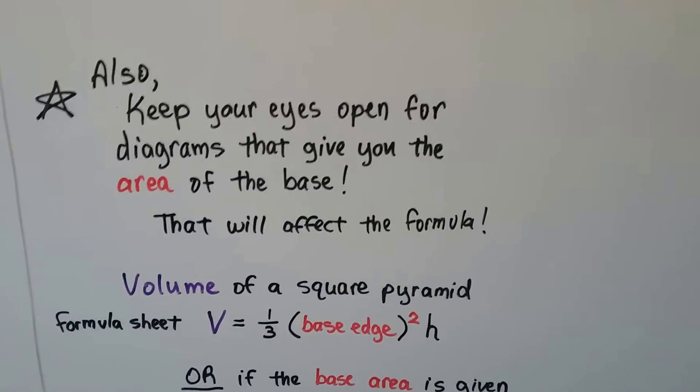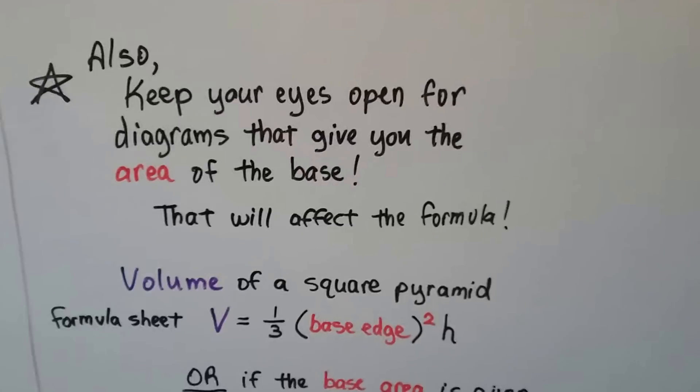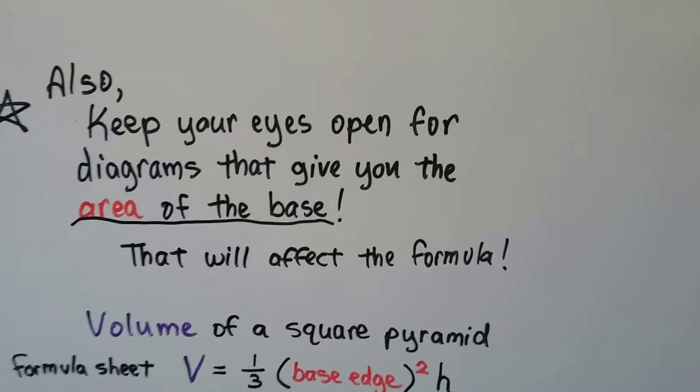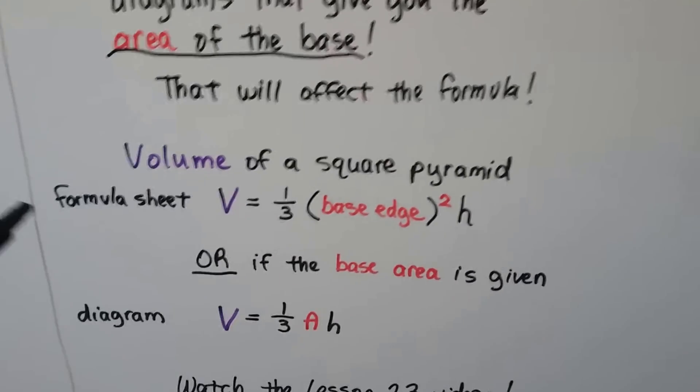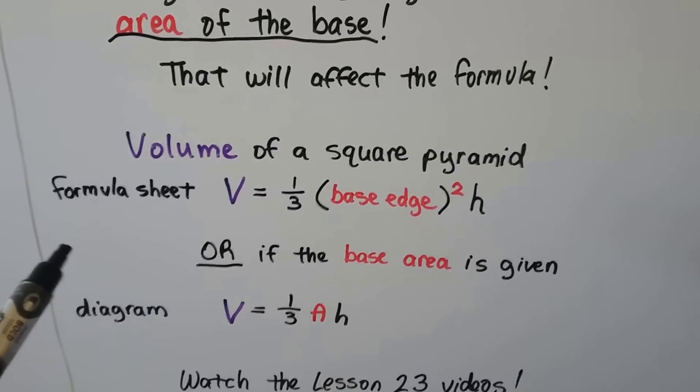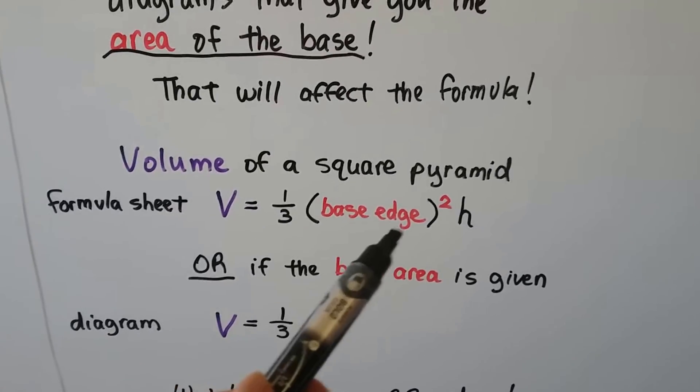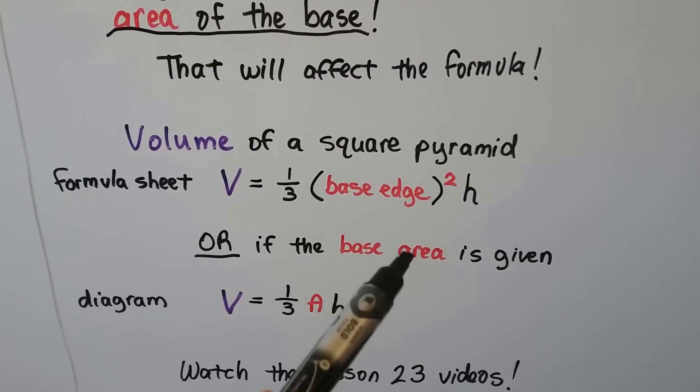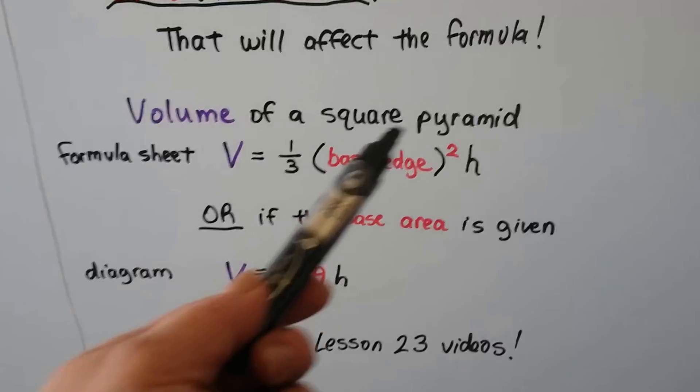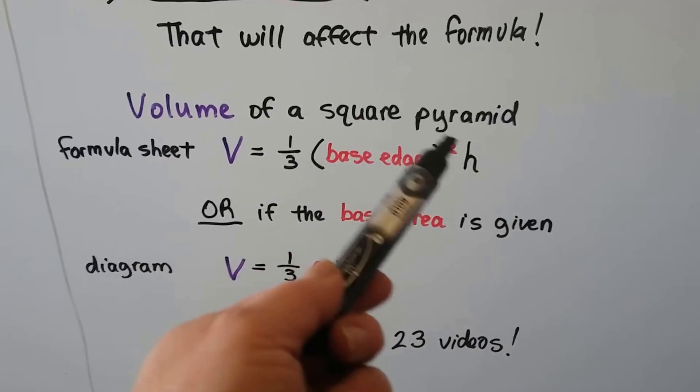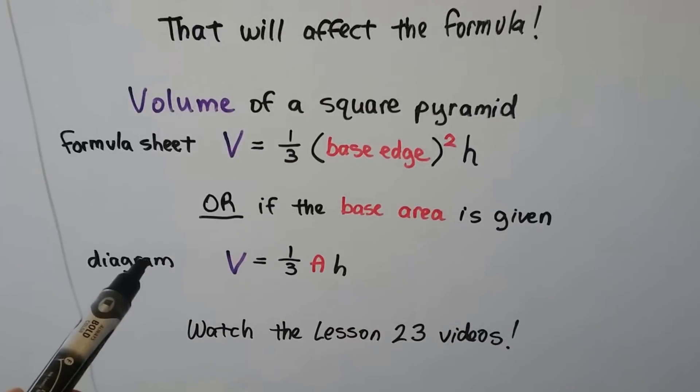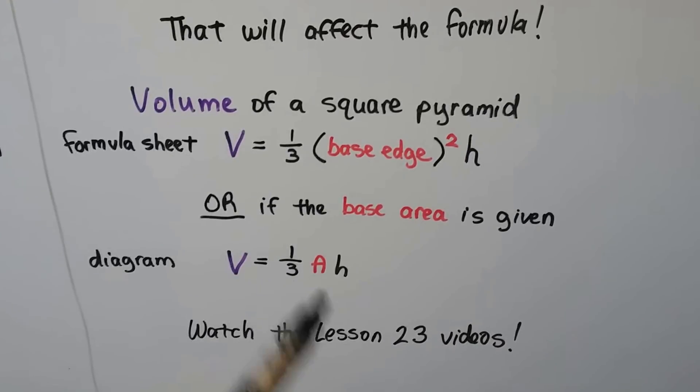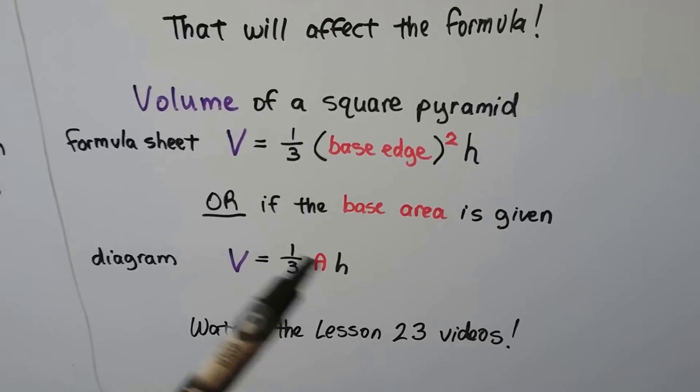Also, keep your eyes open for diagrams that give you the area of the base. They might give you the area of the base. That's going to affect the formula on the sheet. The sheet's going to say the volume of a square pyramid is V equals one-third times the base edge squared times height. But, the diagram, if it gives you the base area, this is the base area, so you don't have to do base edge squared. If the diagram gives you the base area, now you can just figure it as area.